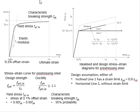That means the Fpk needs to be at least 10% higher than the Fp0.1k. The Fp0.1k is obtained from 0.1% of offset strain, and it is normally falling in the range of 0.8 to 0.88 times the Fpk.